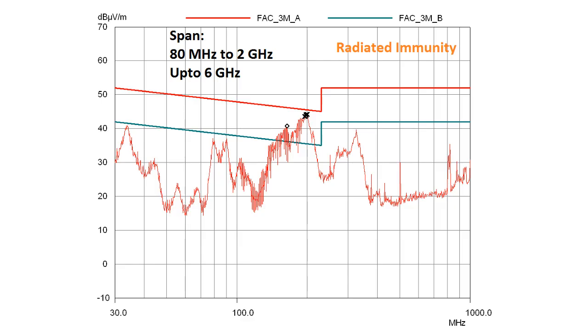Frequency Range. Testing of electromagnetic susceptibility for general purposes is mostly done in the frequency range from 80 MHz up to 2 GHz.